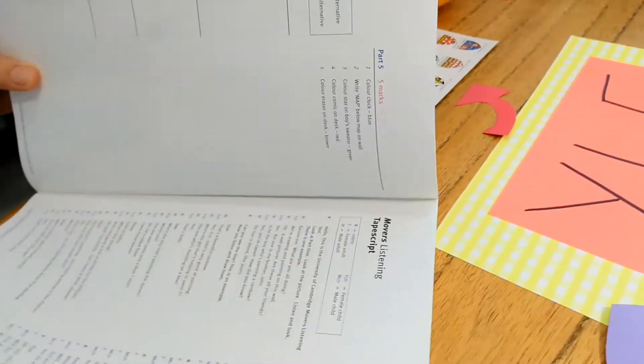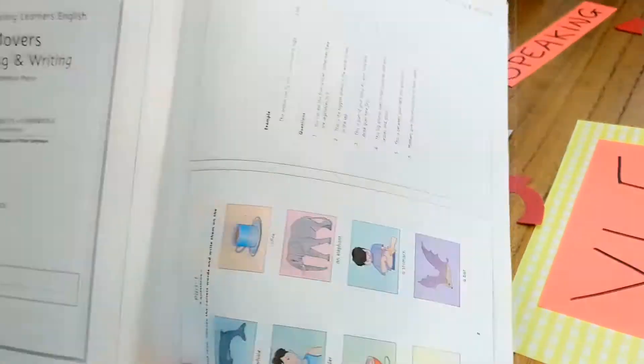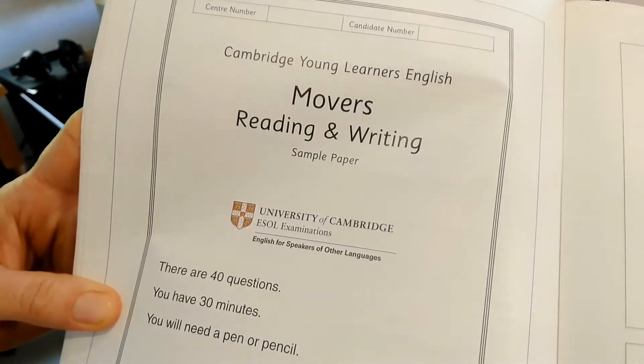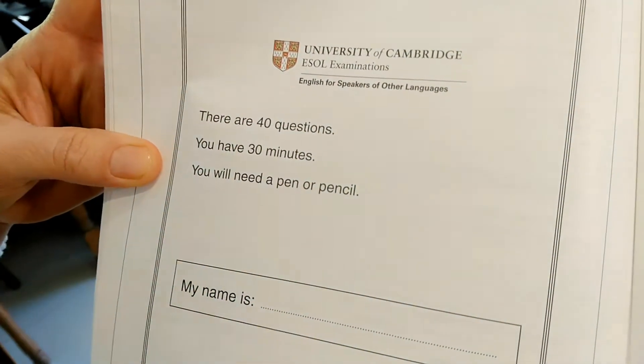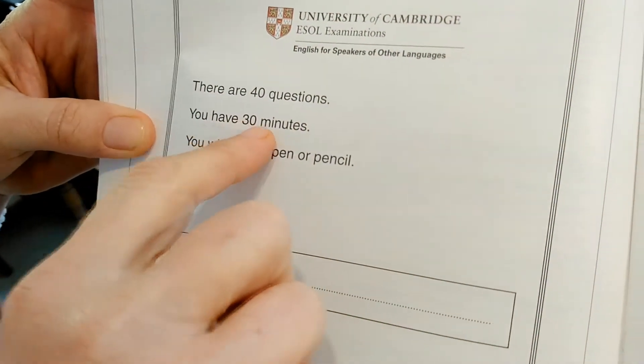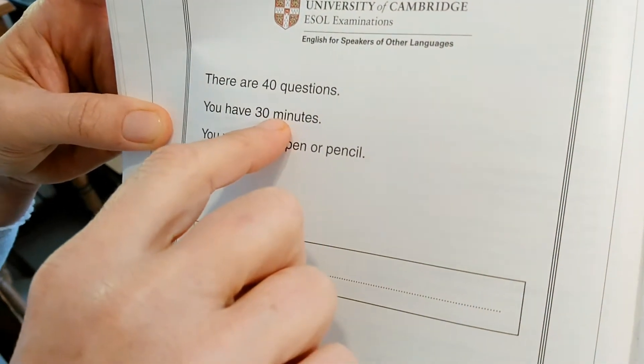Then we pass on to the reading and writing paper. Again, you have to write down your name. You know that there are 40 questions and that you have 30 minutes to complete this test.